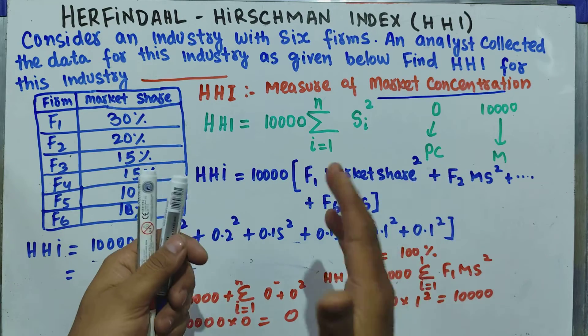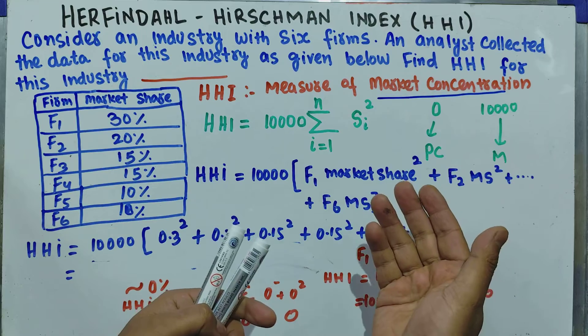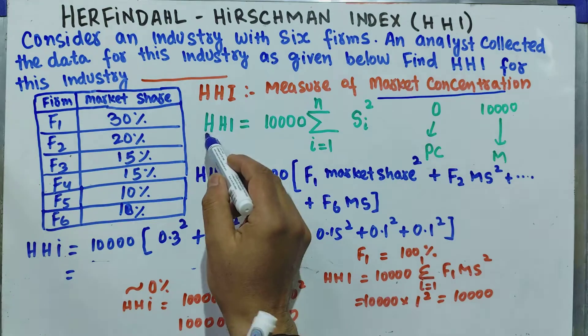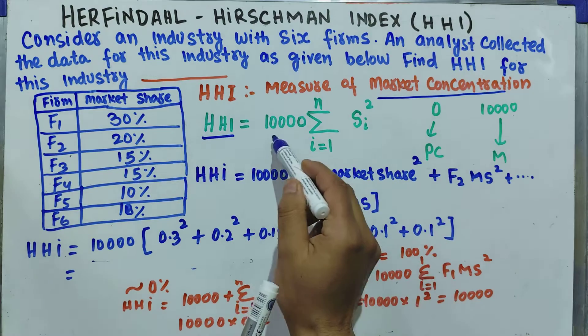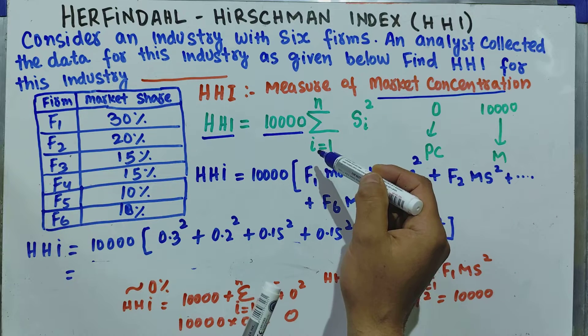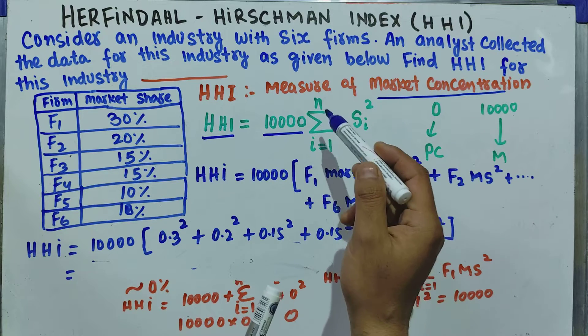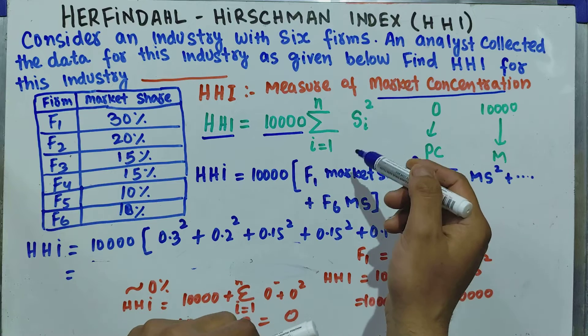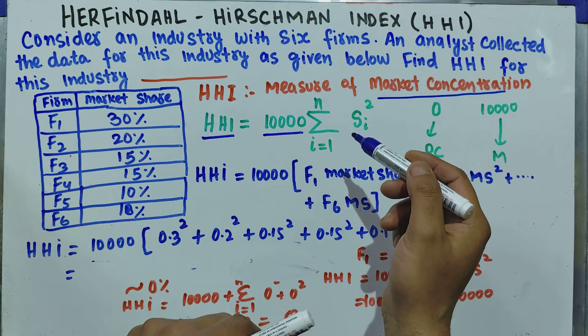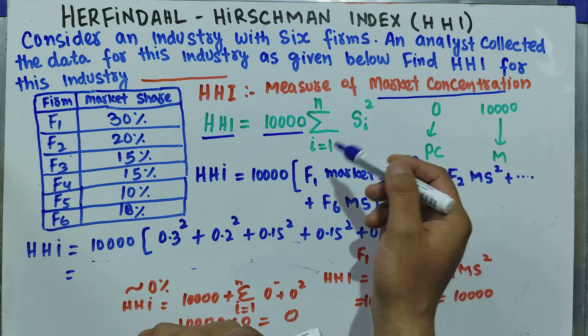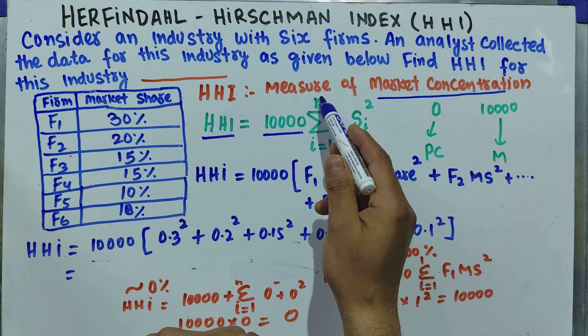It is calculated by the formula: HHI equals 10,000 times the summation of the market share of each firm squared. That is, summation of i equals 1 to N, where N is the number of firms, and Si squared denotes the share of each firm in this industry squared.